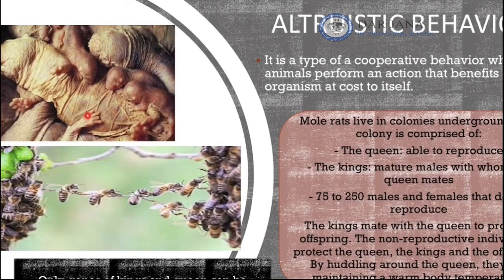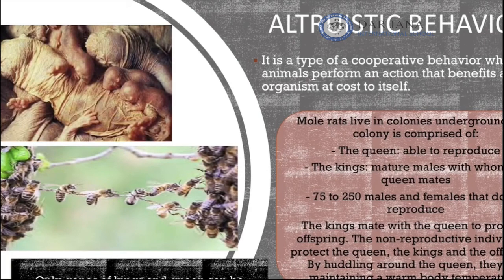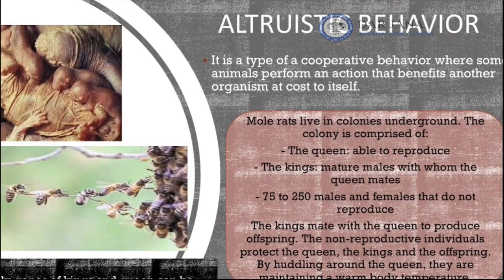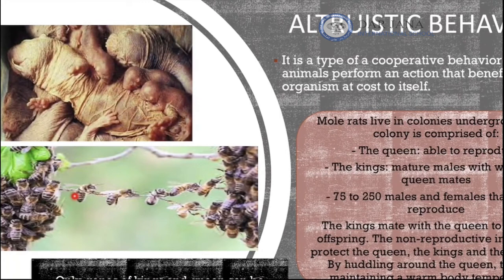In a mole rat colony, the queen is the only female able to reproduce, the kings are the mature males that can mate with the queen, and there are 75 to 250 non-reproductive males and females. The non-reproductive individuals protect the queen, the kings, and the offspring by huddling around the queen to maintain a warm body temperature. Similarly, bees cooperate to form a living bridge, sacrificing themselves to create a path for others.